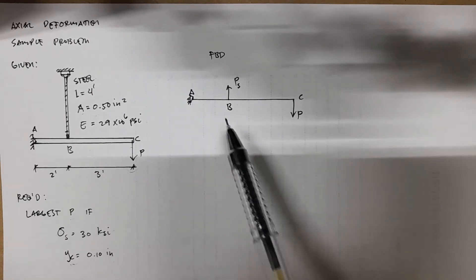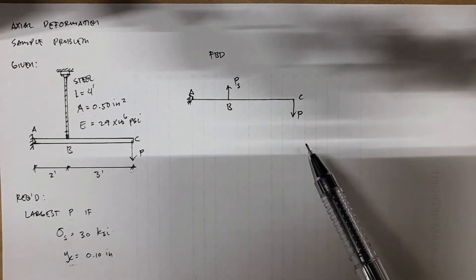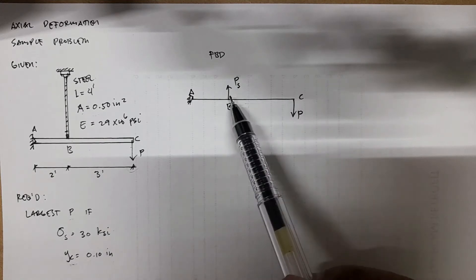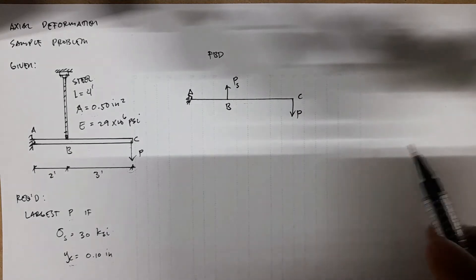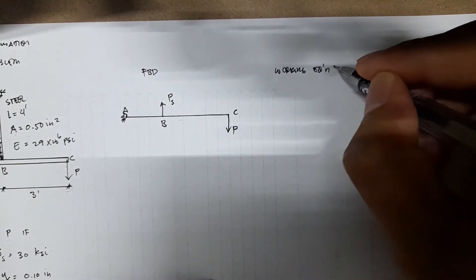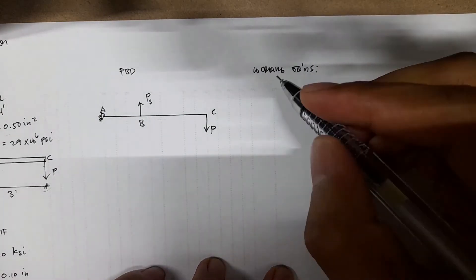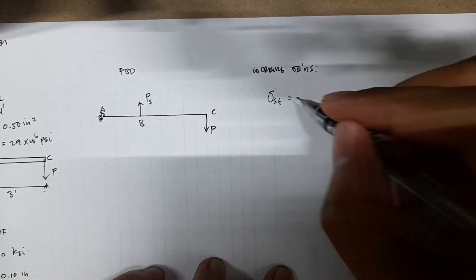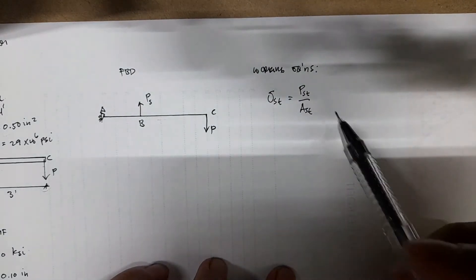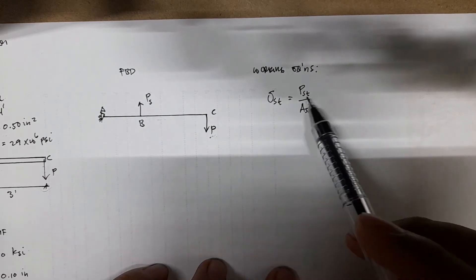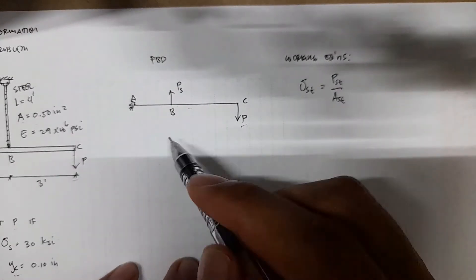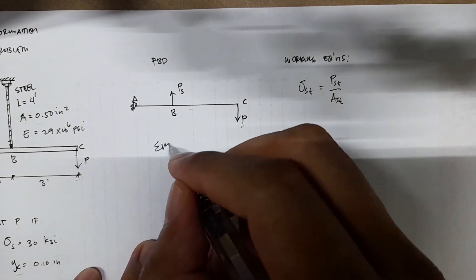If we isolate the bar ABC and represent the system in a free body diagram, we have the bar ABC with force P applied at point C and the internal force on the steel. The working equations we can use to solve this problem: First, we solve for PST by making use of the stress equation, normal stress or axial stress. We have PST over AST. We're going to find the relationship between PST and P.